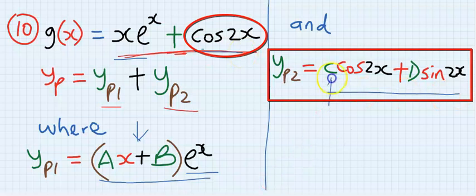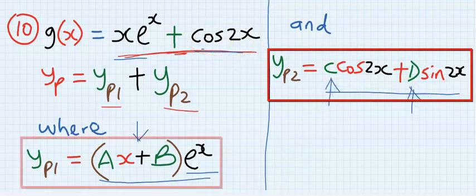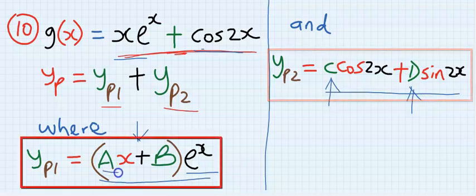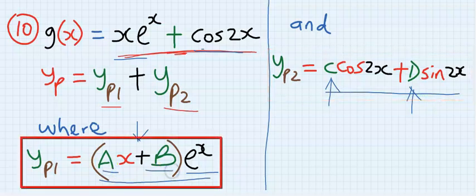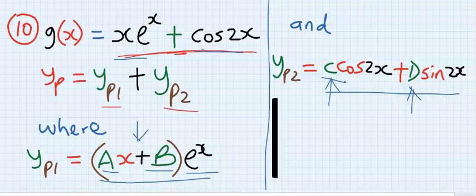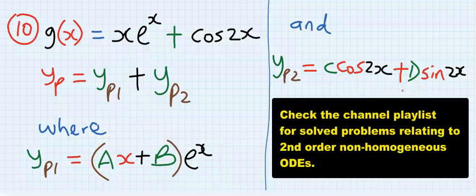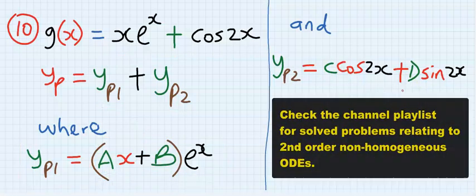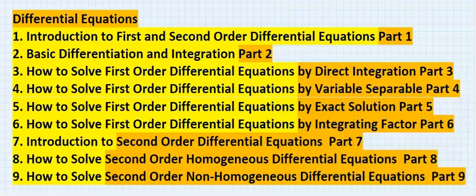Remember, the first particular solution uses a and b. However, since a and b are already used, the second particular solution takes c and d instead. An example will make this clear. I will see you in the next video.